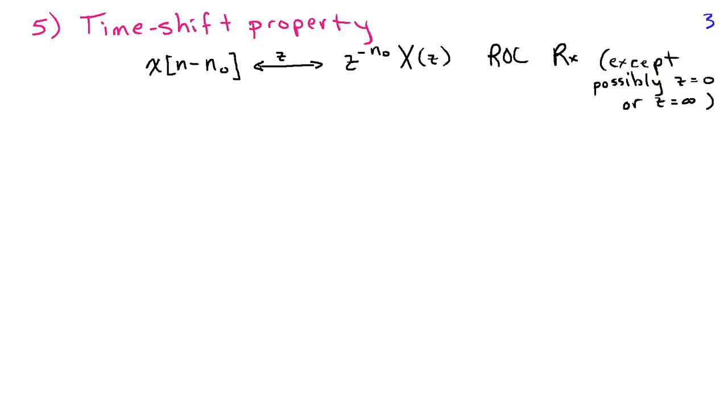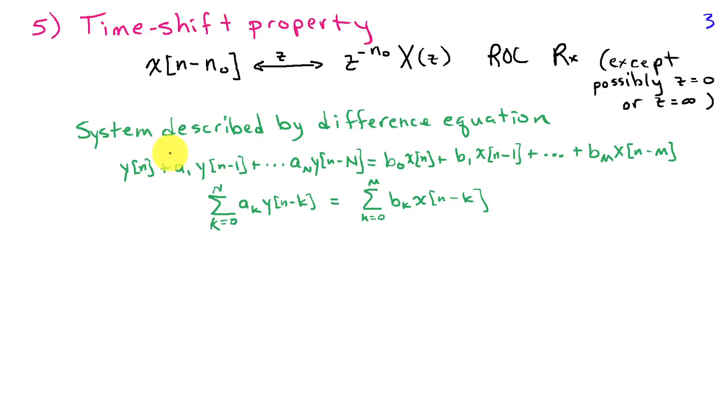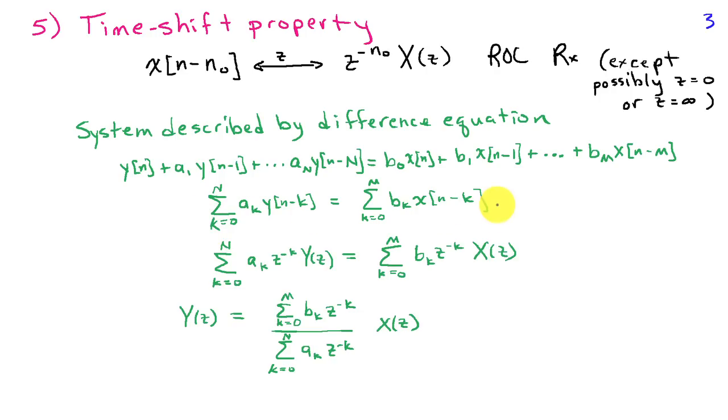We can do some interesting things with the time-shift property and systems. In particular, we're going to look at a system described by a difference equation with linear constant coefficients. If I write this in general form, the sum from k equals zero to n of a_k y[n-k] equals the sum from k equals zero to m of b_k x[n-k]. Difference equations are widely used in signal processing because they are very simple to implement and allow us to compute outputs y for inputs x without necessarily using a very long convolution.